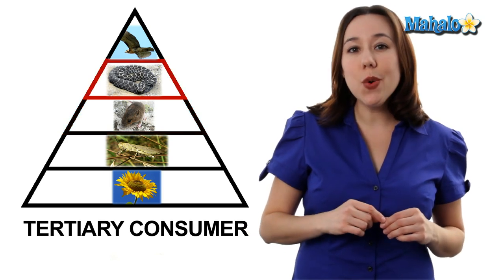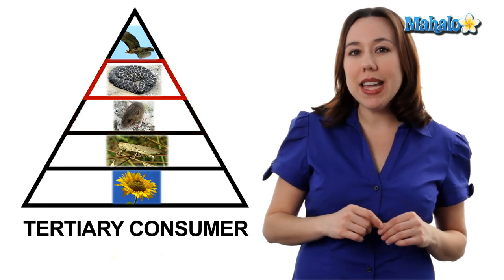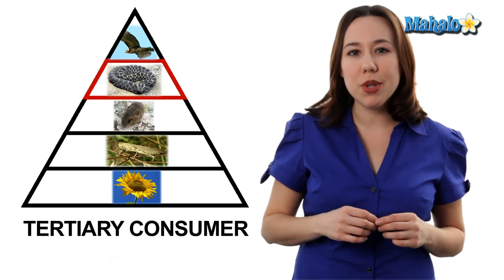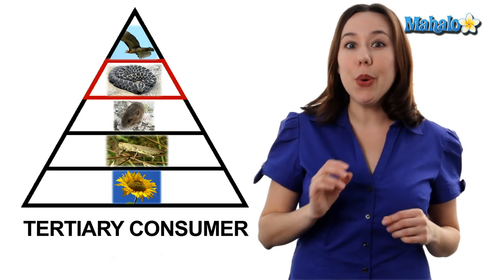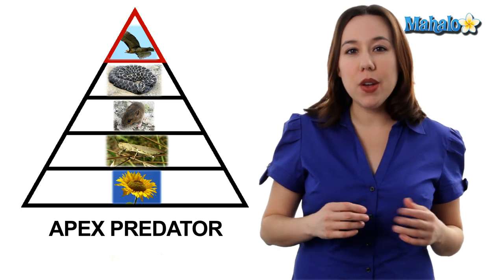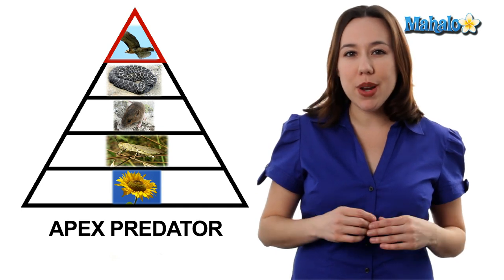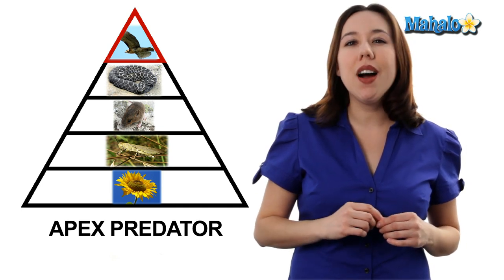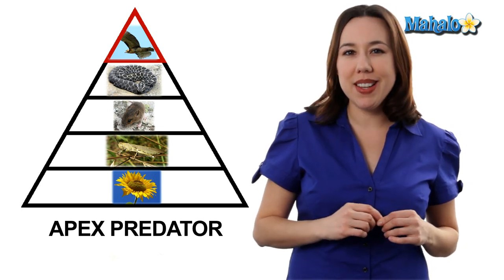That field mouse is then going to be eaten by a tertiary or third level consumer, let's say a rattlesnake. And that rattlesnake can then be eaten by a quaternary or apex predator — in our example, a red-tailed hawk will do just fine. Trophic structure continues to drive evolution as prey become better adapted at avoiding predators, and those predators get better adapted to getting their prey.